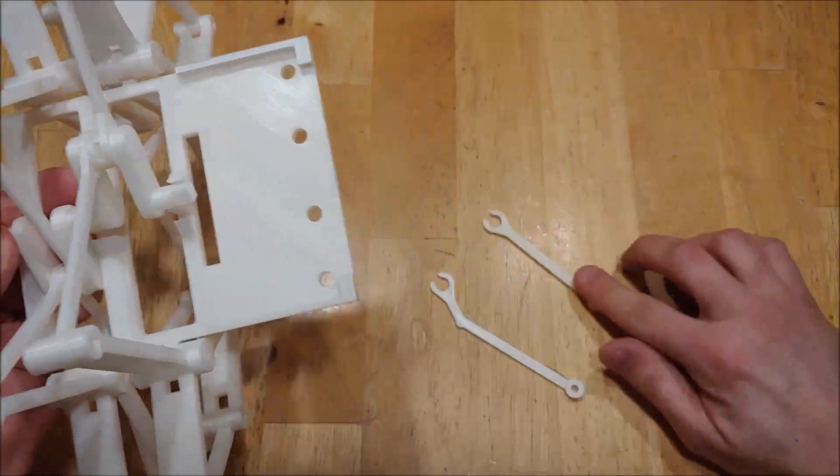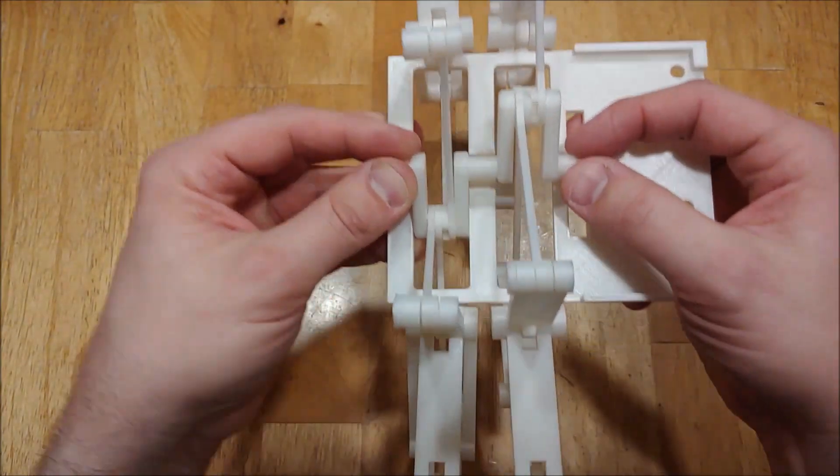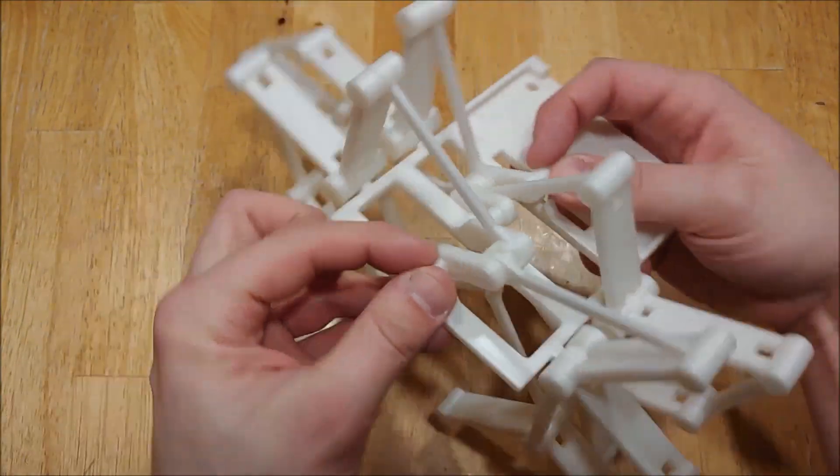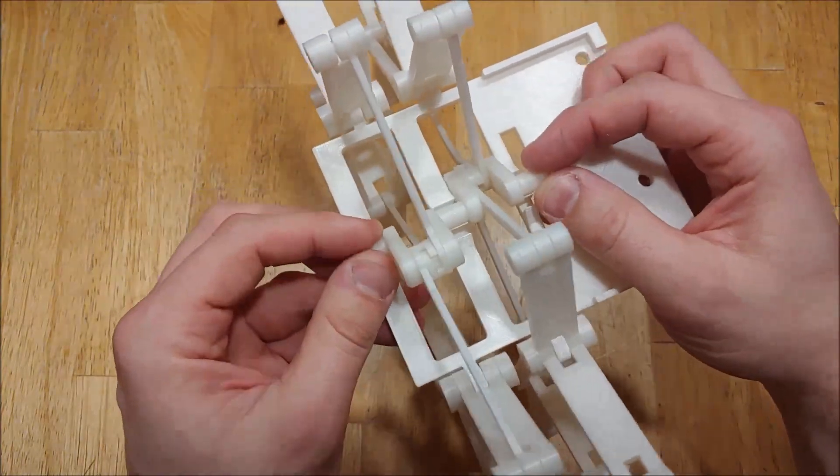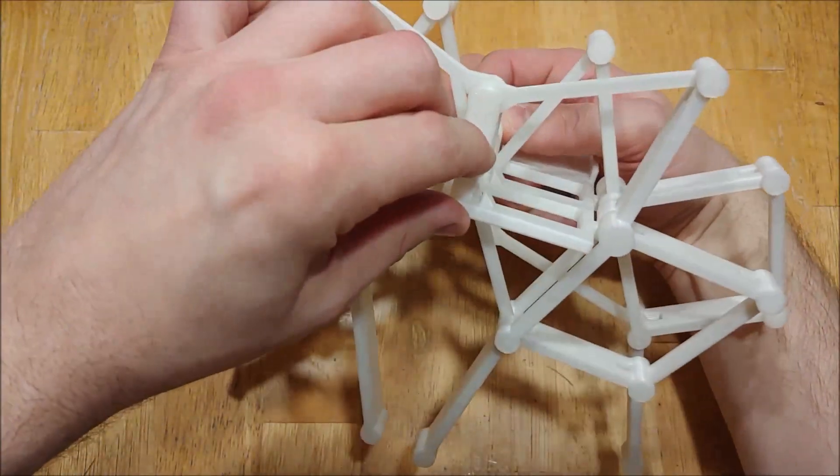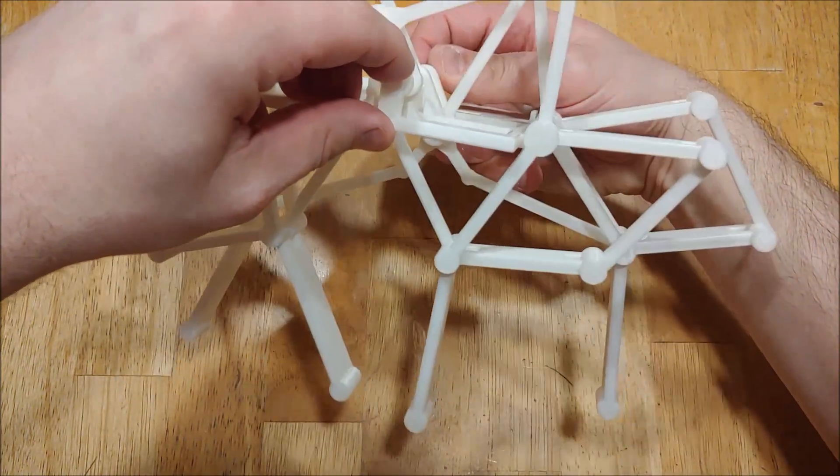I would recommend printing an extra set or two of these because they do break very easily. It just so happens I didn't, but anyway. So I'm holding the crankshaft down because it's not time to attach it yet. But you can see, as I turn it, it is doing the two-legged walking.